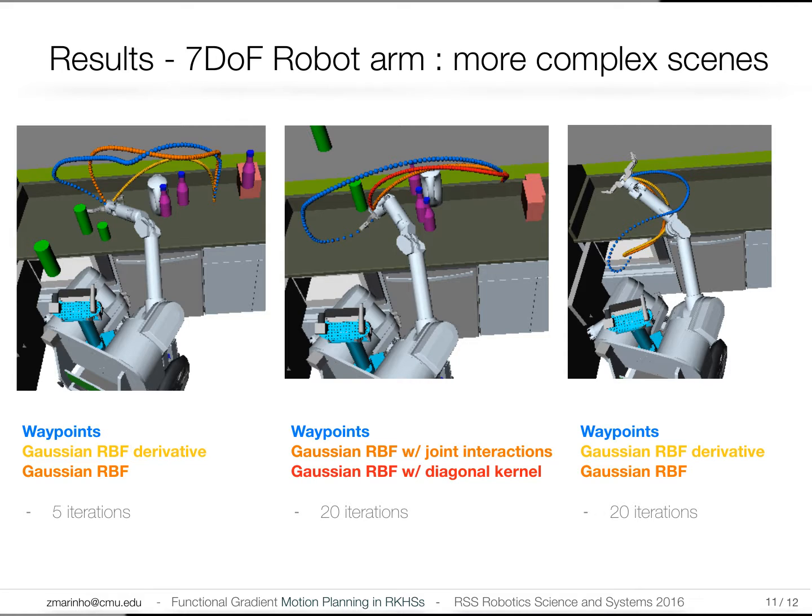We experimented with a seven-degree-of-freedom arm with different kernels, where each kernel has an associated notion of smoothness or efficiency. Here we show kernels that optimize joints independently, and others that optimize interactions among joints.